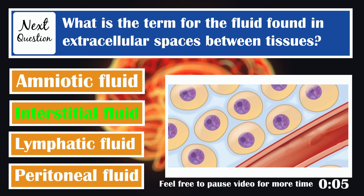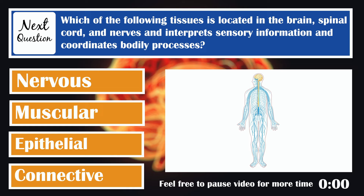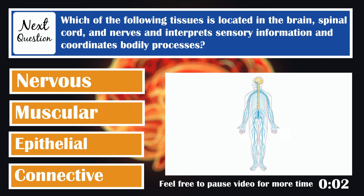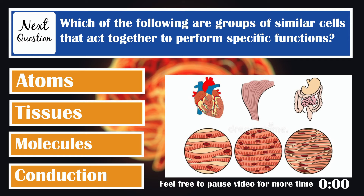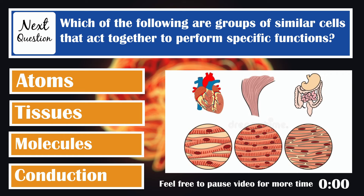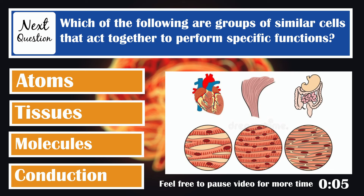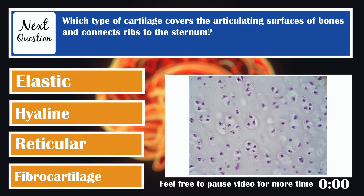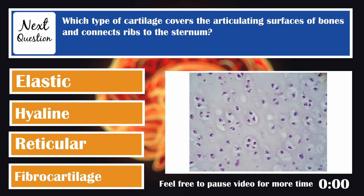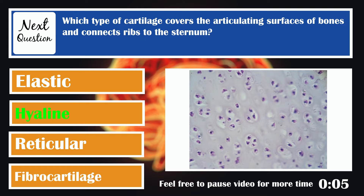Which of the following tissues is located in the brain, spinal cord, and nerves and interprets sensory information and coordinates bodily processes? Nervous tissue interprets sensory information and coordinates bodily processes. Which of the following are groups of similar cells that act together to form specific functions? Tissues organize themselves into organs. Which type of cartilage covers the articulating surfaces of bones and connects ribs to the sternum? Hyaline cartilage is elastic, rubbery, and smooth and covers the articulating surfaces of bones and connects ribs to the sternum.